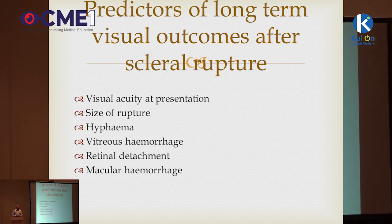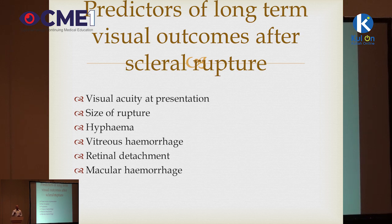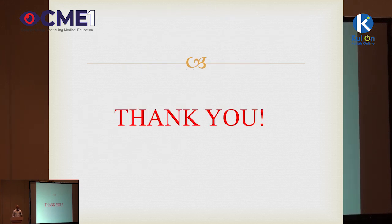The most important predictors of long-term visual outcomes are what you identify at the baseline examination. If they present with visual acuity of light perception, they will likely have worse long-term vision than someone presenting with 6/24. This is why documenting visual acuity at presentation is critical. Patients with larger ruptures do worse due to higher risks of retinal detachment and PVR. If there is vitreous hemorrhage, retinal detachment, or macular hemorrhage at first presentation, those patients also tend to have worse visual outcomes. Thank you all for your time and attention.